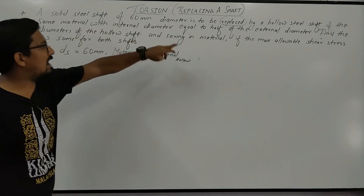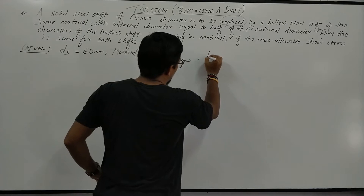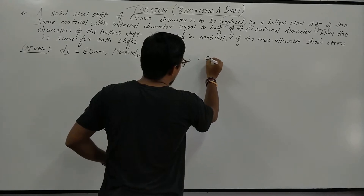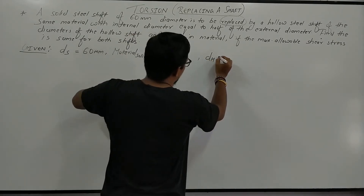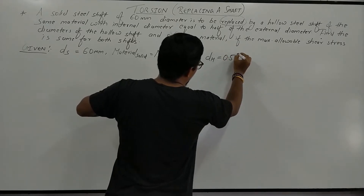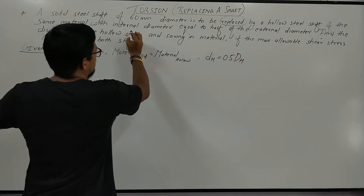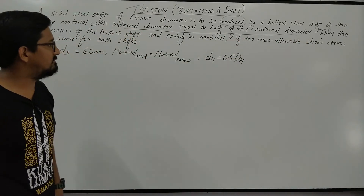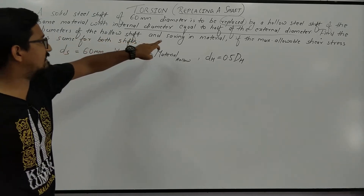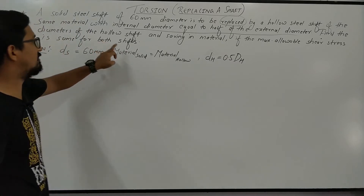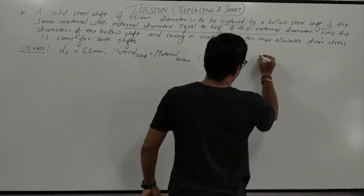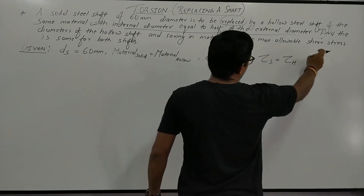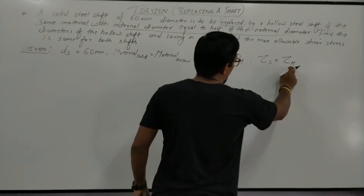The internal diameter is equal to half of the external diameter. So for the hollow shaft, the internal diameter dh (small) is equal to 0.5 times DH (capital). Also, the maximum allowable shear stress for the solid equals the maximum allowable shear stress for the hollow; that is, tau of solid equals tau of hollow.